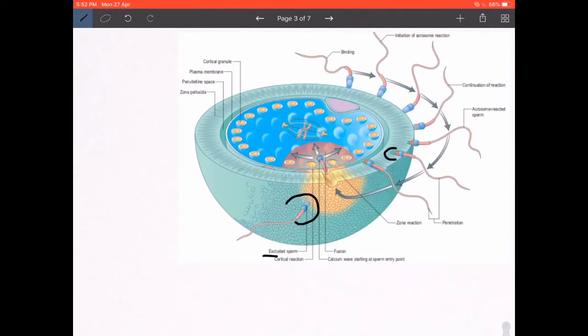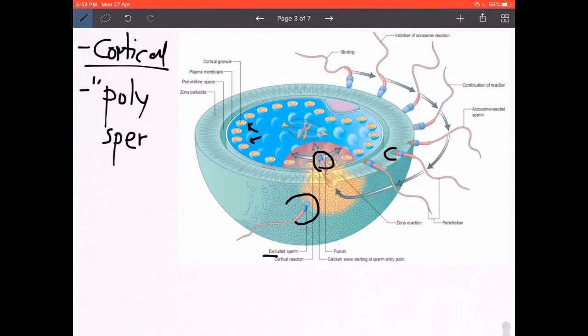After crossing the perivitelline space, the sperm head comes in contact with the cell membrane of the oocyte itself, and that is where the cortical reaction occurs. The cortical reaction is the fusion of all these cortical granules that you can see in yellow. They release proteolytic enzymes in the perivitelline space, and the oocyte membrane becomes absolutely impermeable to any further sperm contact. This is what prevents polyspermy.